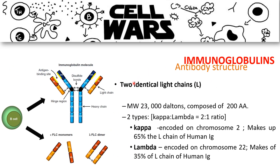There are two identical light chains in each antibody, and two types of light chains: kappa or lambda. The characteristics of those light chains depend on which chromosome they are encoded on. Kappa is encoded on chromosome 2, and lambda chains are encoded on chromosome 22. The light chain consists of about 200 to 220 amino acids, and the positioning of the amino acids depends on the sequence type of the antibody light chain.